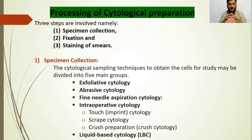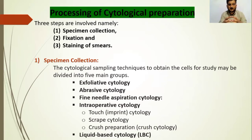The processing of cytological preparation is done by three steps. The first step is specimen collection, the second step is fixation, and the third step is staining of smear. Five techniques are used to collect the cytological sample: exfoliative cytology, abrasive cytology, fine needle aspiration cytology, intraoperative cytology — which is further subdivided into touch cytology, scrap cytology, and crush preparation cytology — and the last technique is liquid-based cytology.